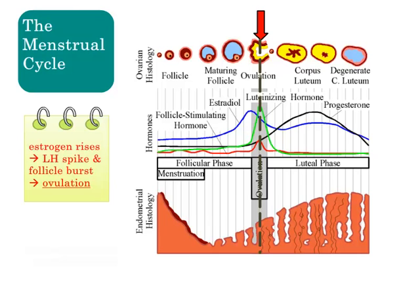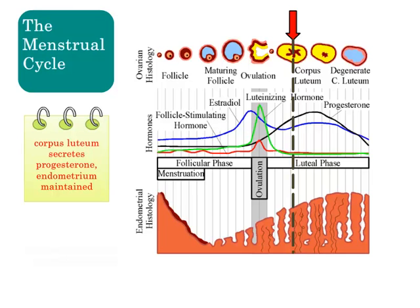Even if two or more ova are released, this occurs within 24 hours of the single LH peak. After ovulation, the luteal phase begins. The ruptured follicle transforms into the corpus luteum and begins secreting progesterone. Within 24 hours of ovulation, progesterone maintains the thickened endometrium to allow for implantation of the human embryo at about 7 to 10 days after conception. Progesterone also dries up cervical fluid and raises the basal body temperature.